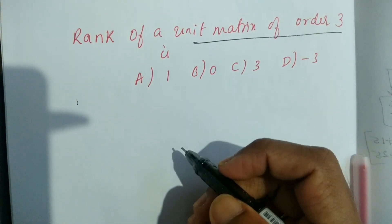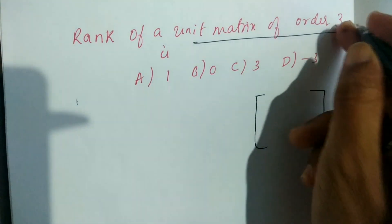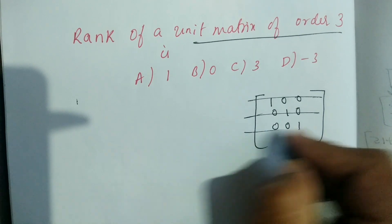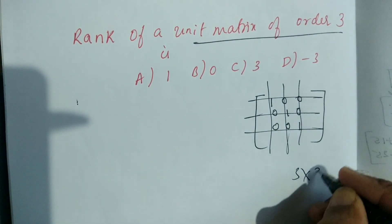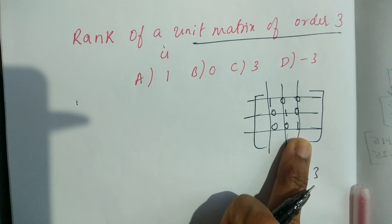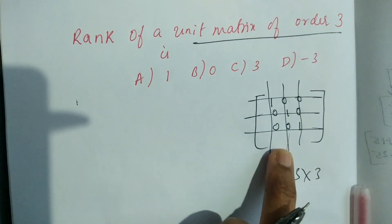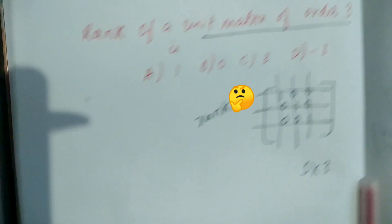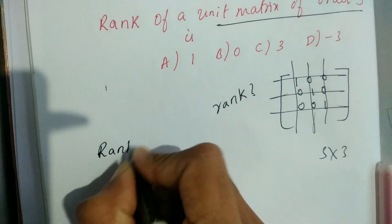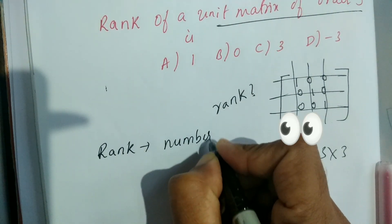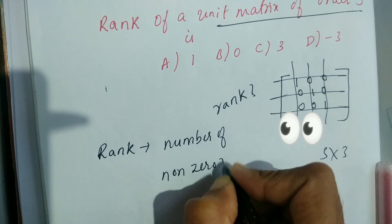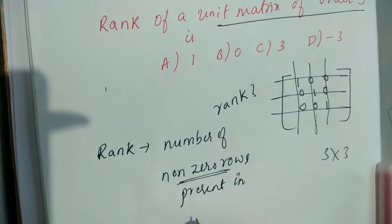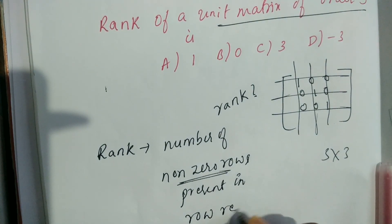Unit matrix of order 3 is a 3 by 3 matrix with diagonal entries 1, 1, 1 and all off-diagonal entries 0. Rank is nothing but the number of non-zero rows present in row reduced echelon form.